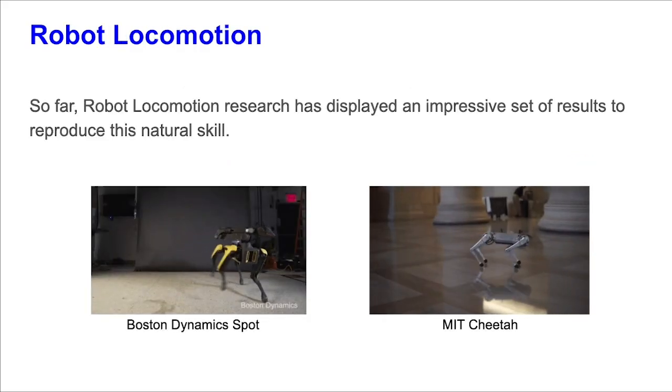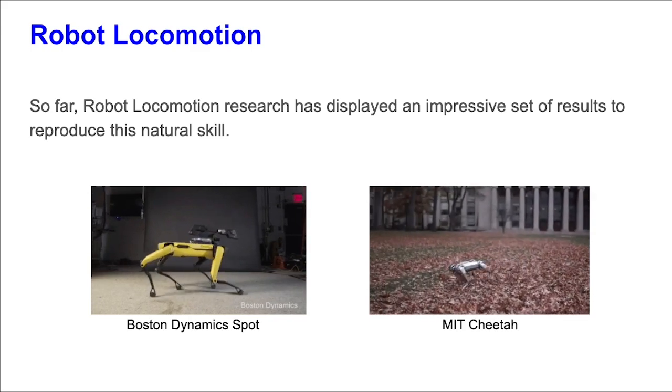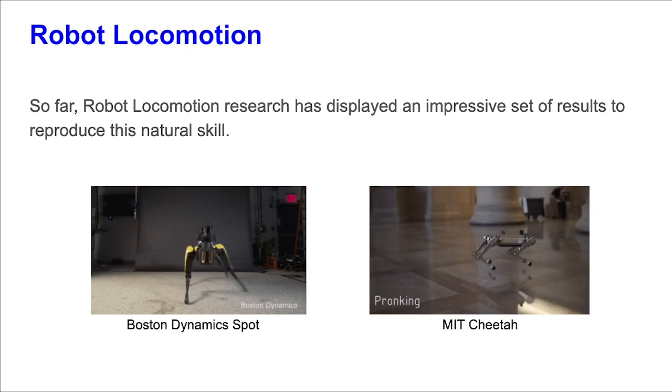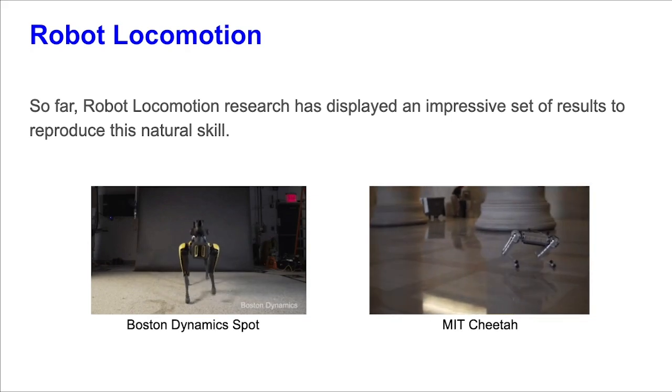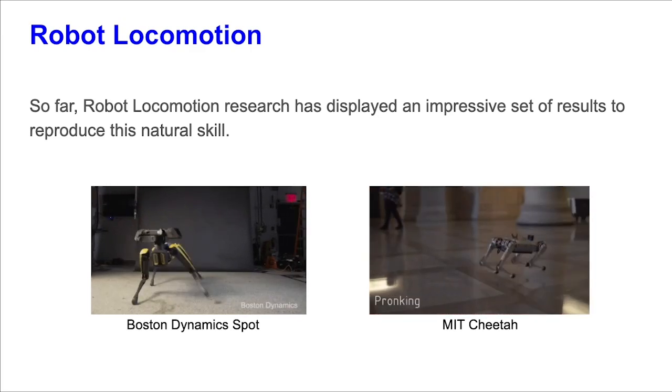So far, robot locomotion research has displayed an impressive set of results to reproduce this natural skill. On the left, you can see the dancing behavior from Boston Dynamics Spot Robot, while on the right you can see the MIT cheetah jumping around and sprinting through piles of leaves.